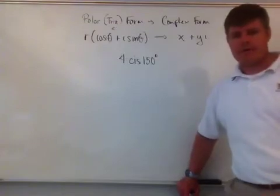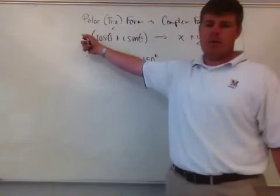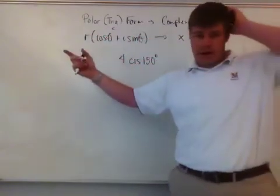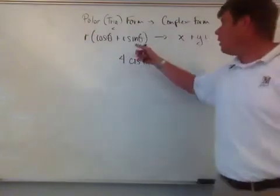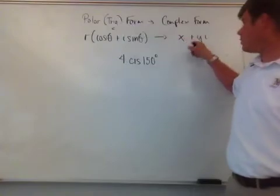Very simple. Again, you have to know your formulas. Trigonometric polar form is r times the quantity cosine theta plus i sine theta, or for shortcut it is r cis theta. And I'm going to turn that into the complex number form which is x plus yi.